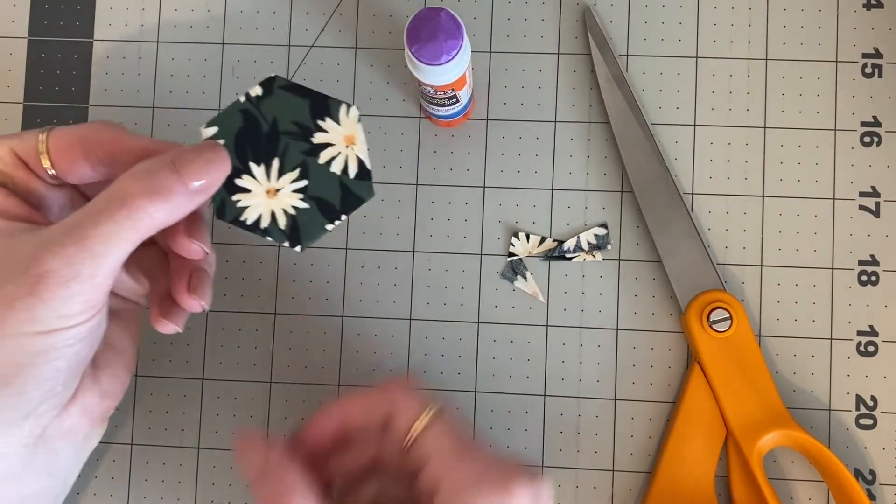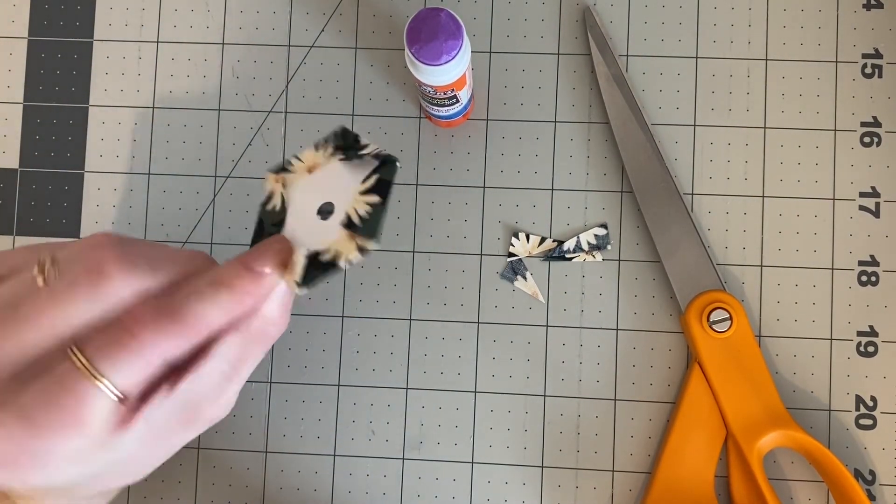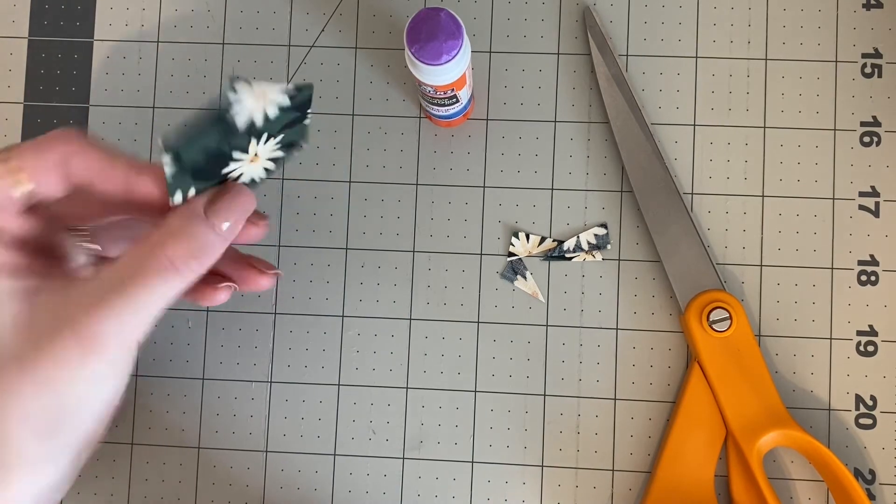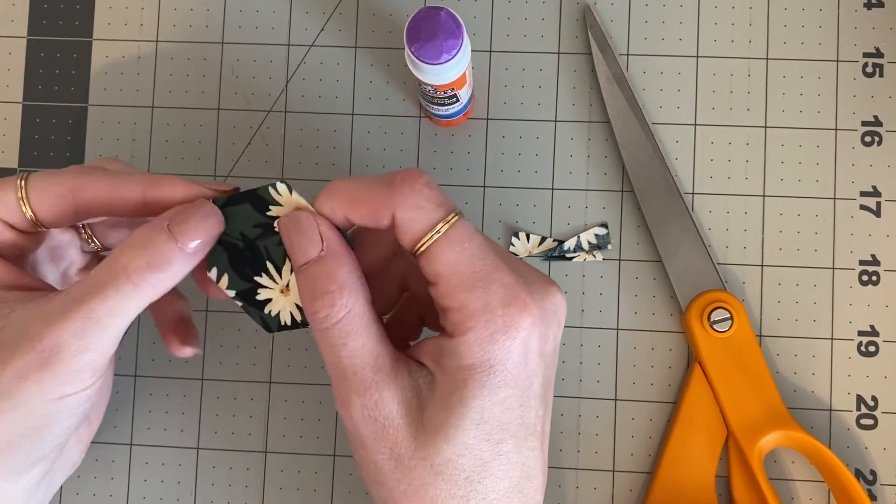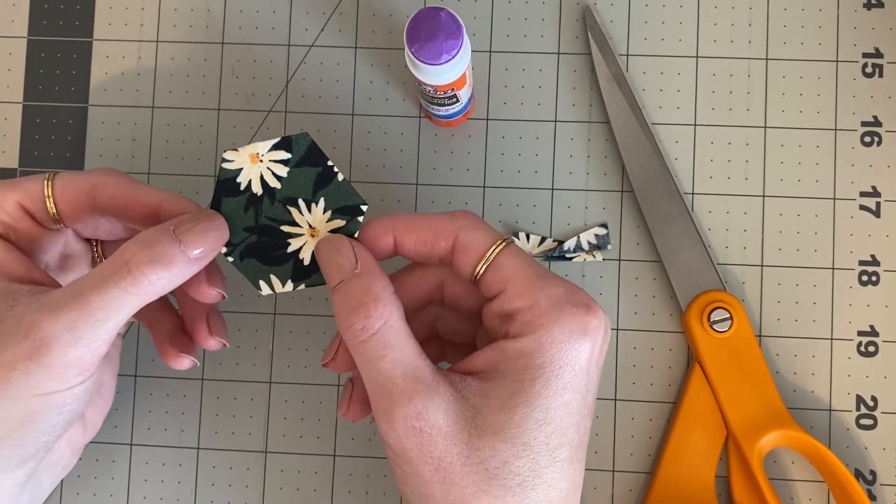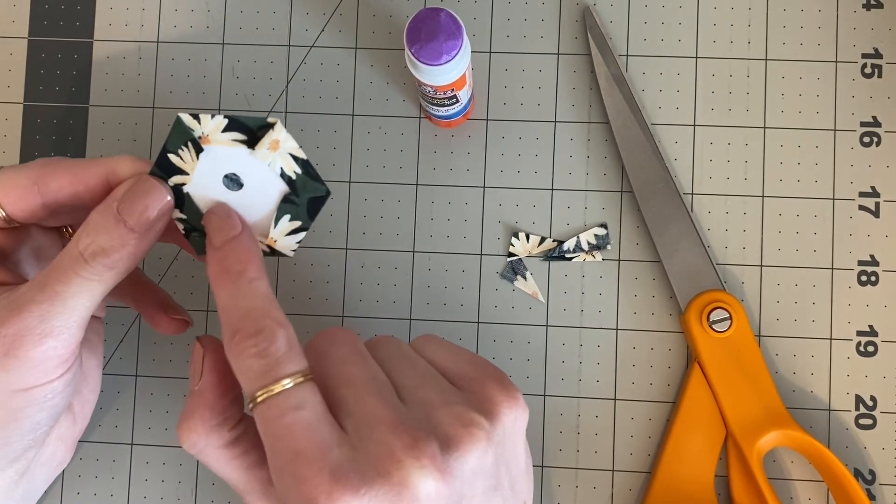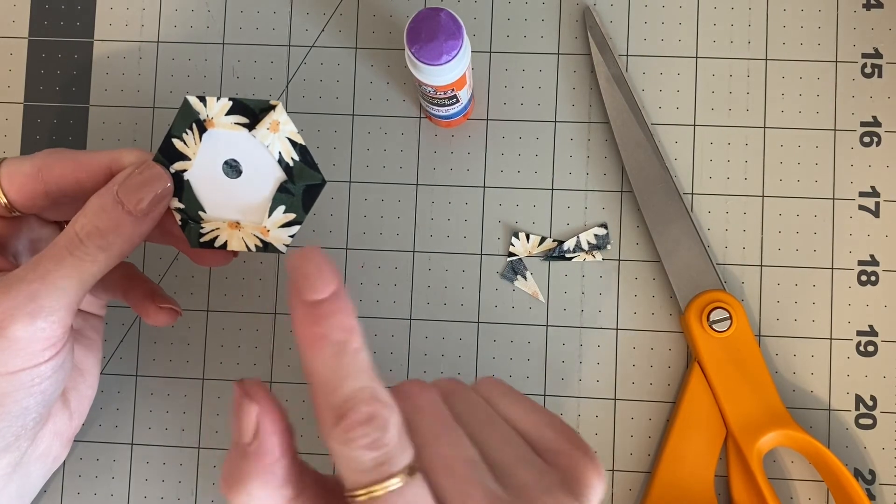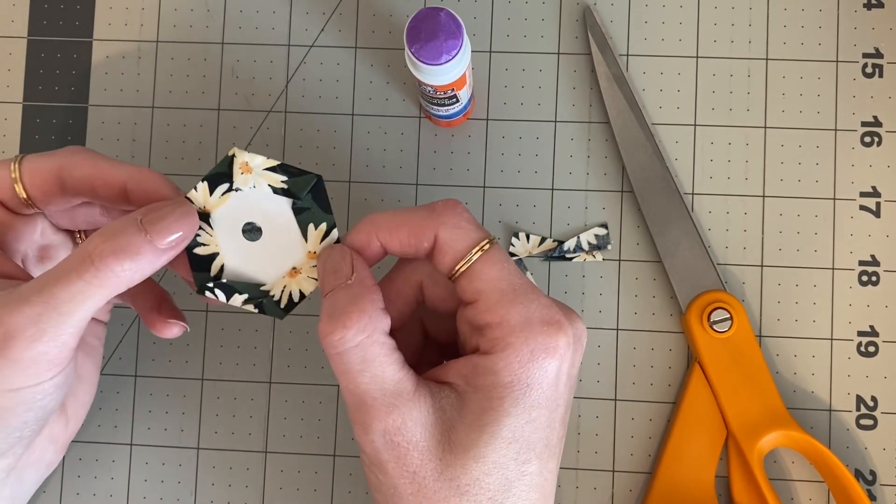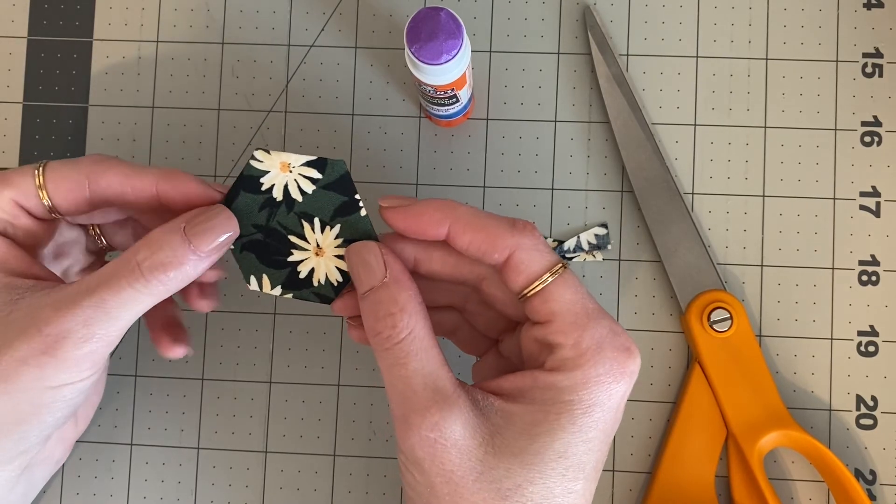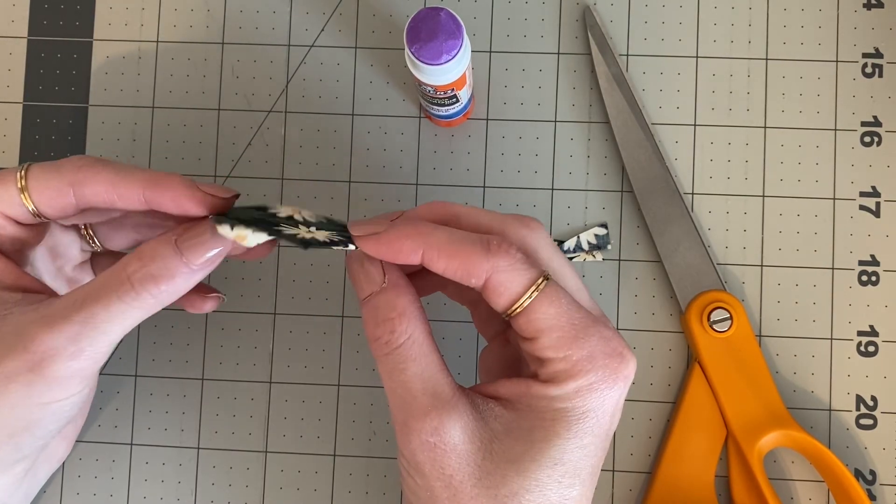And there you go, there's your little hexi all glue basted - super quick and super easy. You just need some glue. So you can look for my next video where I show how to remove these templates compared to thread basting, and you can decide what will work best for you. So thanks for watching!